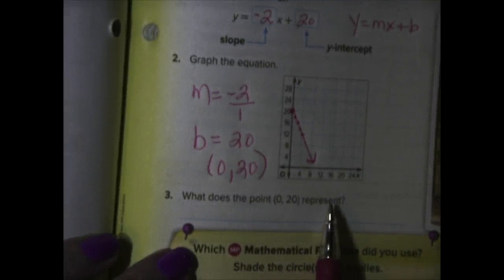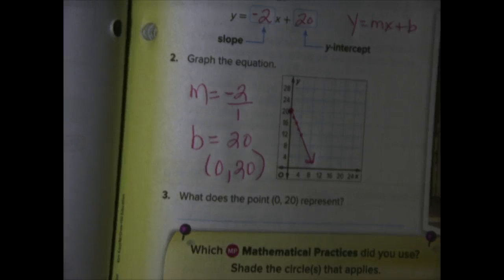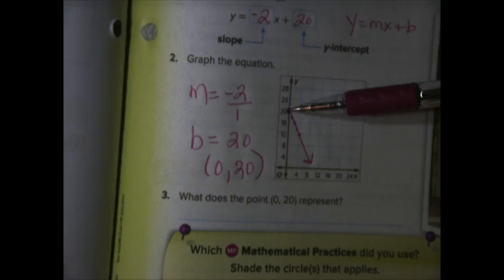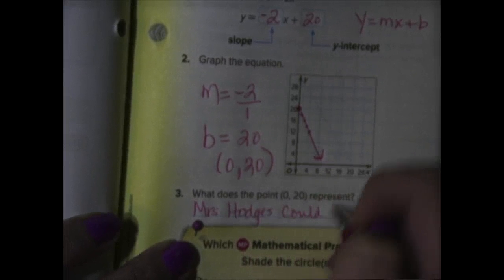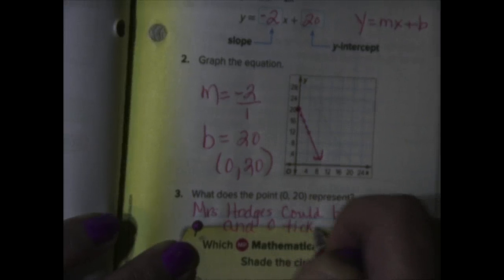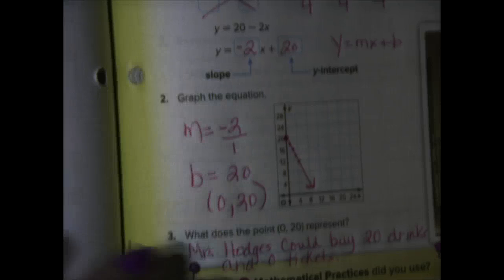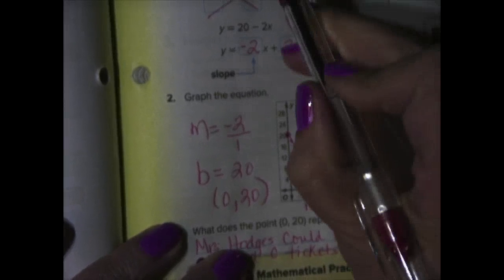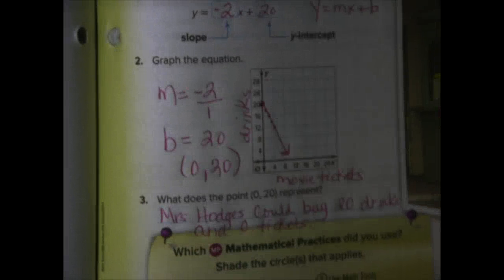It says, what does the point 0,20 represent? So, we need to take a look at it and try to interpret what the y-intercept means in this case. Sometimes, this is difficult for students to understand, but 0,20 means that Mrs. Hodges could buy 20 drinks and 0 tickets. So, we'll just write that. Mrs. Hodges could buy 20 drinks and 0 tickets. Now, the way I knew that is that I recall from up at the top, it said the total cost of X movie tickets. So, let's look down here. Our X-axis is movie tickets. And then up here, it says, and Y drinks. So, our Y-axis was drinks.